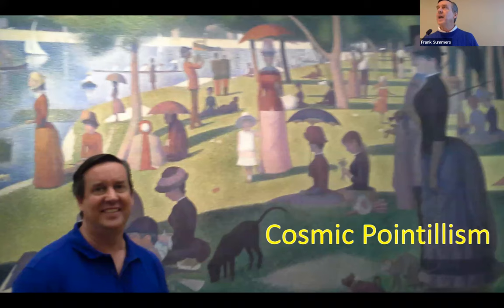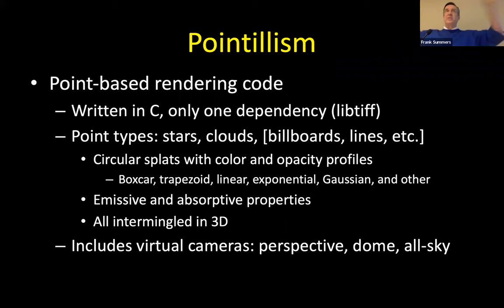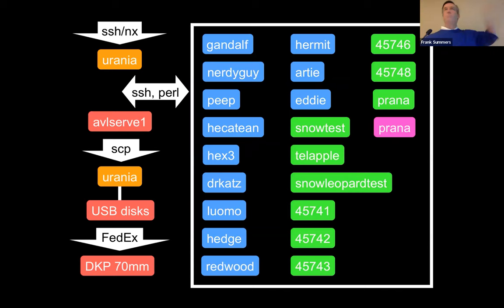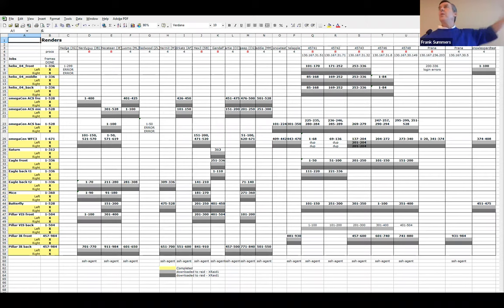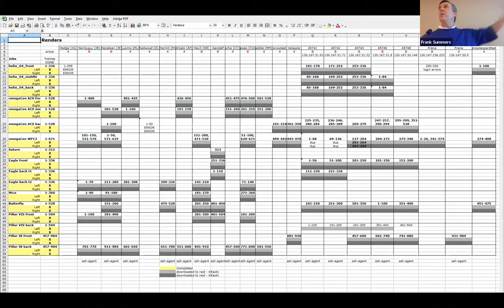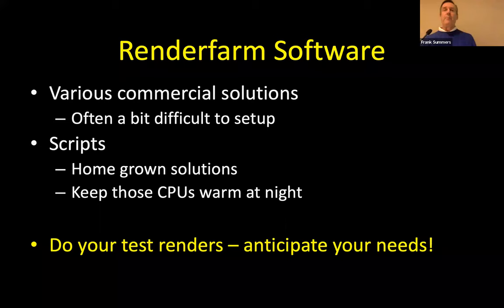The other thing to think about is will you need a render farm? For IMAX Hubble 3D, we used every CPU in the building we could get our hands on. I kept them running as much as possible. Here's that spreadsheet to track which sequence was running on which machine and which frames. You might need this. The important point is that you do your test renders. You got to anticipate what you need. For my recent Stefan's Quintet visualization, I thought I should be able to render this over the weekend. And then I realized, no, I have to do it in 4K 60. Yes, we're done.